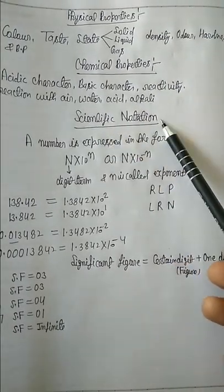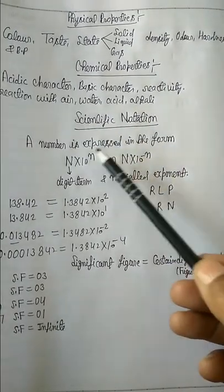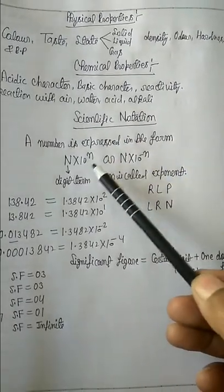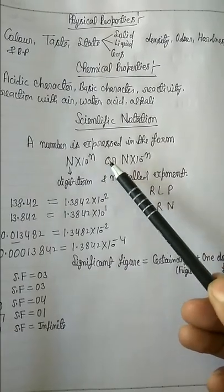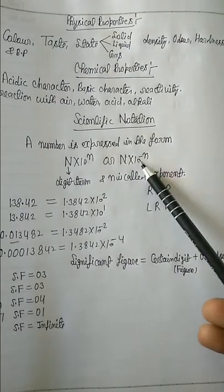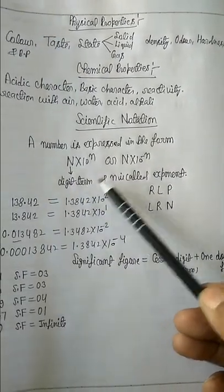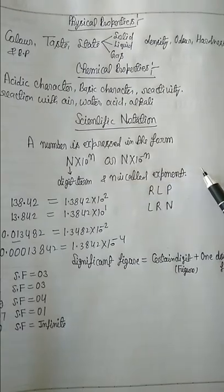Scientific notation. A number is expressed in the form N × 10^n or N × 10^-n, where capital N is called the digit term and small n is called the exponent.